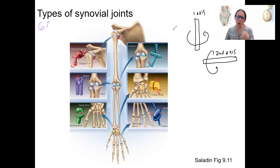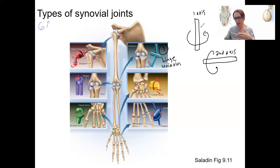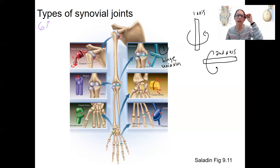Starting with one that can only move in one axis: the hinge joint. This is like a door hinge — it only moves in one direction, called uniaxial. It can only move around one axis; the door can't move in any other planes. Examples of this would be the humerus and ulna — that's your elbow — and also your knee.